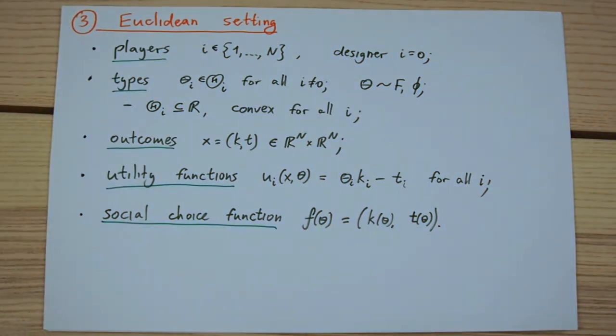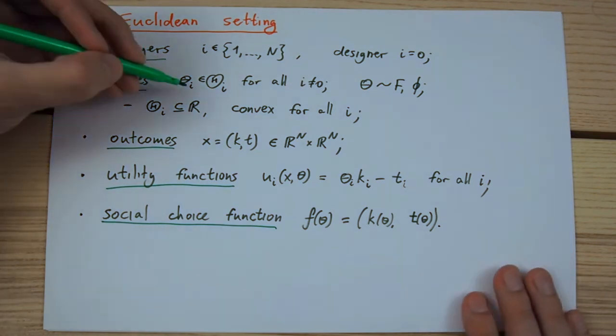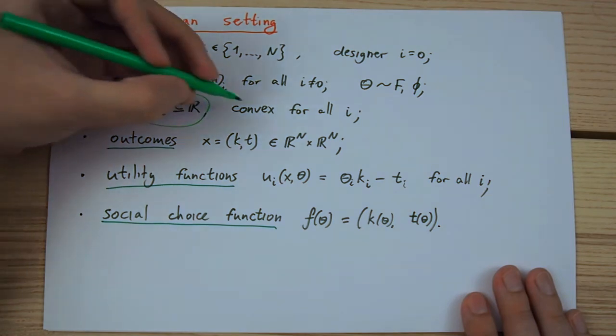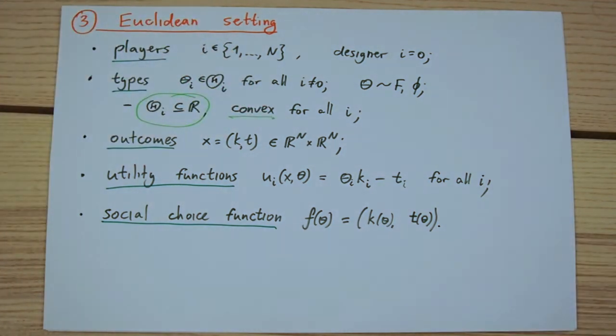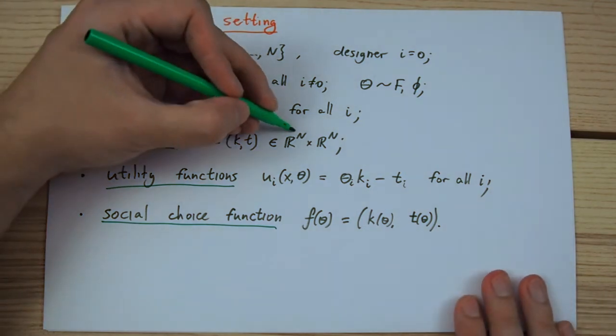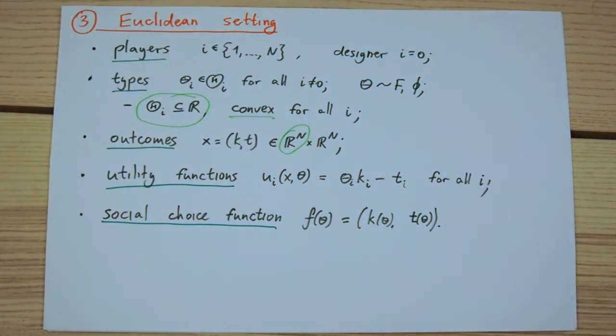The Euclidean setting imposes three main assumptions on top of the quasi-linear setting. The first is that the set of types for every player is a convex subset of the real line. It is also implied that the marginal distribution of type of player i has full support on this interval. The second assumption is that the allocation can be represented as a real number for every player.